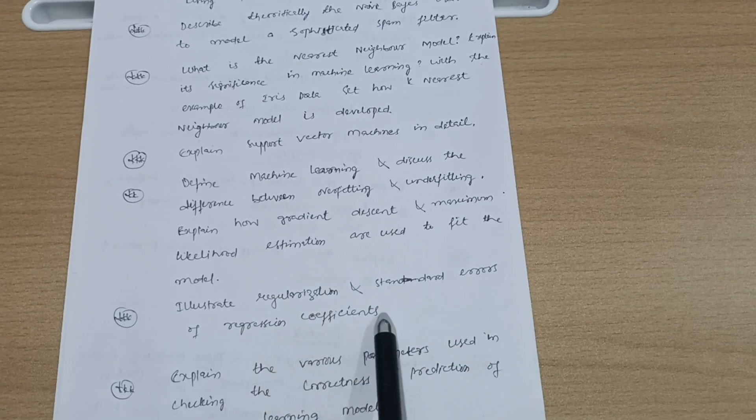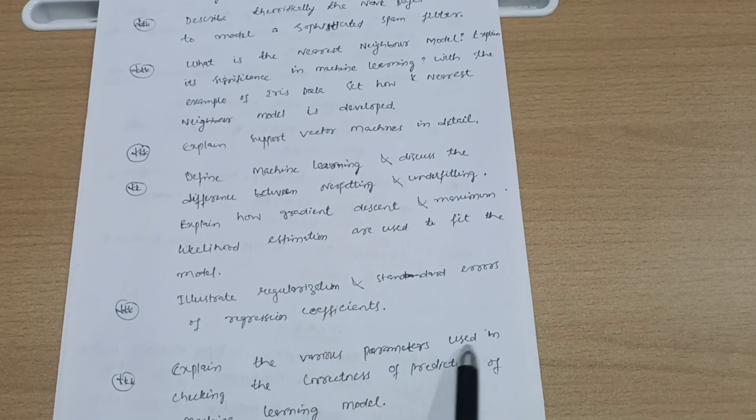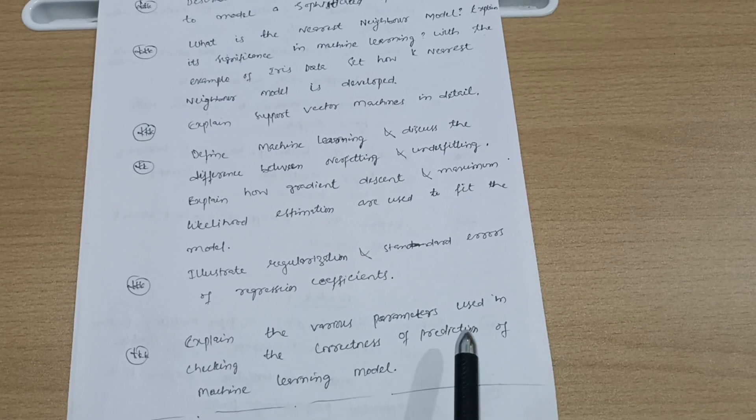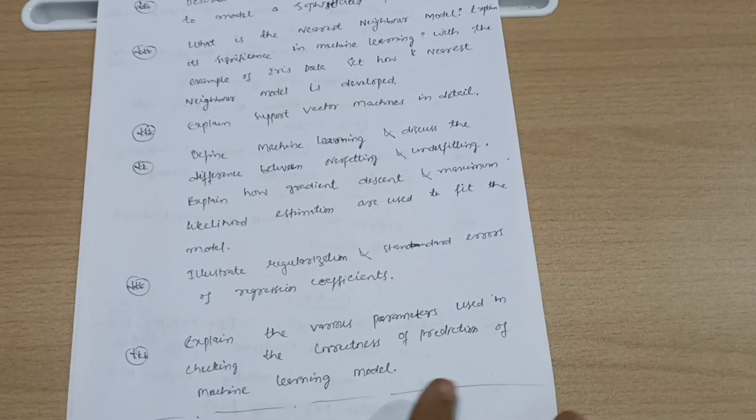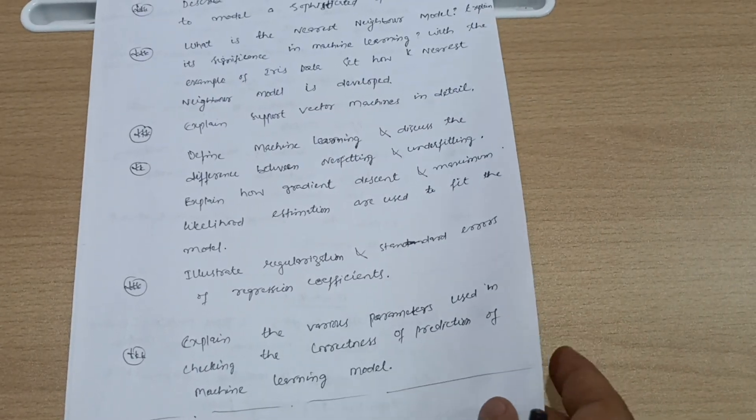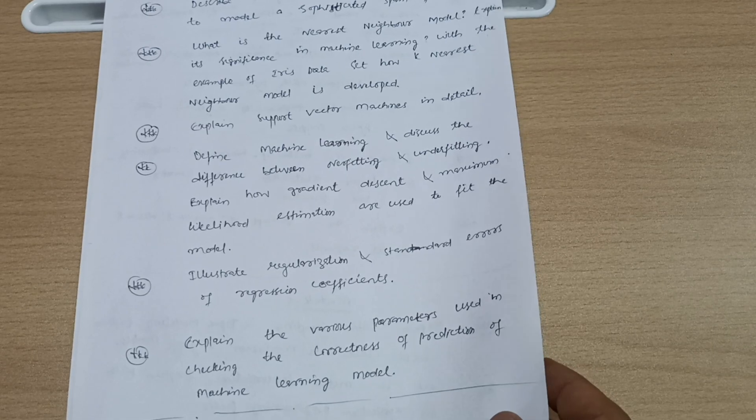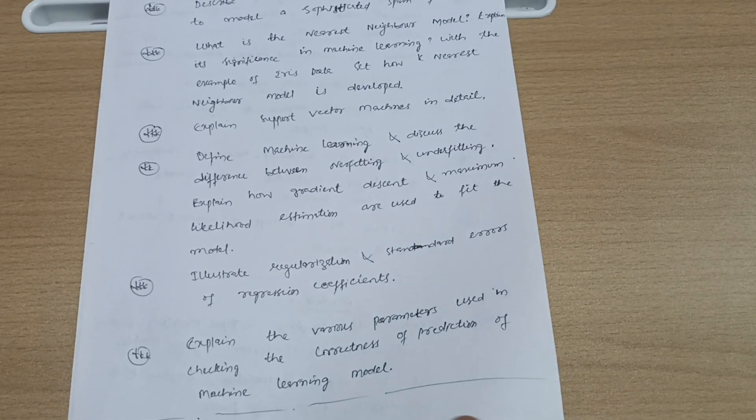Illustrate regularization and standard errors of regression coefficients. Explain the various parameters used in checking the correctness of prediction of machine learning models. These are seven questions from module 3.